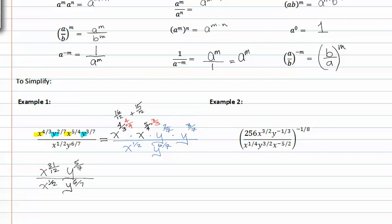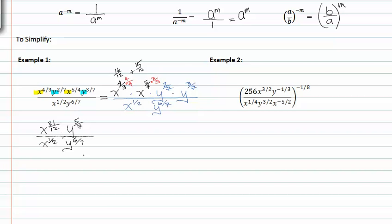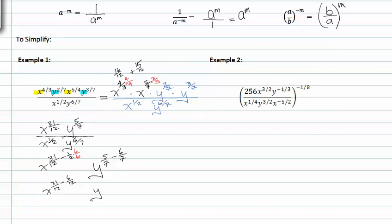From here, I can use the quotient rule. I can take the exponent in the denominator and subtract it from the exponent in the numerator, and that way I can get rid of my denominator. So now I can build up my one-half because it needs a common denominator of twelve, by multiplying by six over six. This will give me x to the thirty-one-twelfths minus six-twelfths, y to the five-sevenths minus six-sevenths.